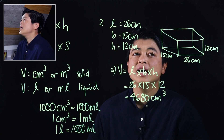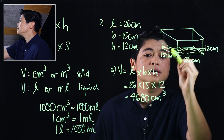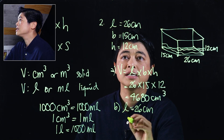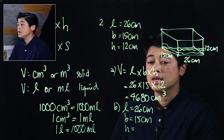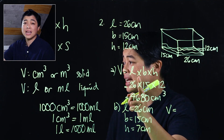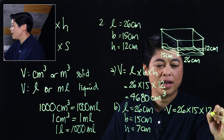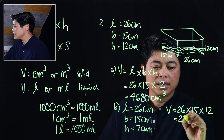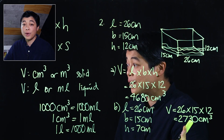For part (b), the container is filled with water to a depth of 7 cm. The length is still 26 cm, the breadth is still 15 cm, but the height of the water is only 7 cm. Since it shares the same formula, this will be 26 times 15 times 7, which equals 2,730 cm³.